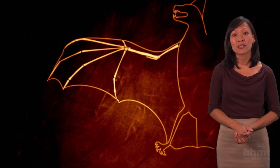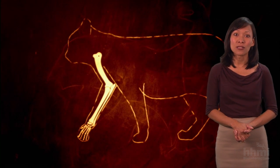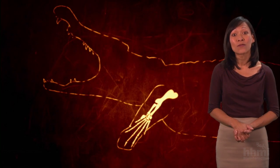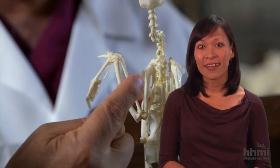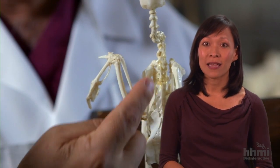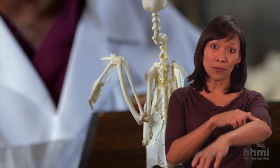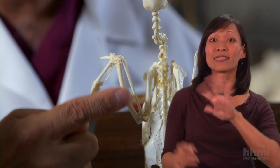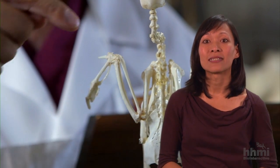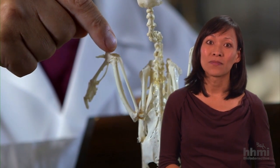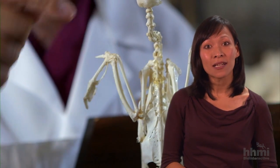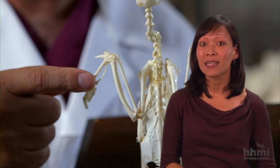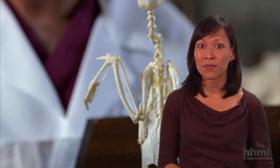Then in the fall, students watch the short film The Origin of Tetrapods and do the click-and-learn activity to refresh their memories and reinforce learning. They then replicate the one bone, two bones, little bones, and digits pattern discussed in the film using dried pasta noodles, modeling clay, and bamboo skewers.